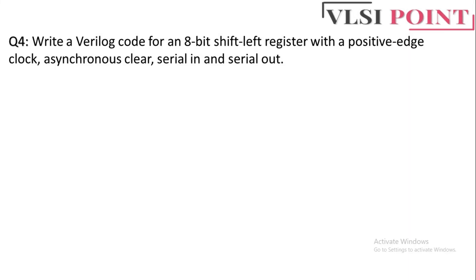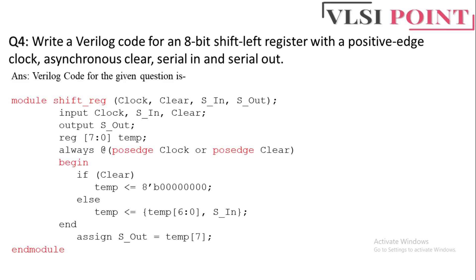Next question: write a Verilog code for an 8-bit shift left register with a positive edge clock, a synchronous clear, serial in, and serial out. The module includes inputs clock, clear, s_in, and output s_out, plus a temporary 8-bit register. We write: always @(posedge clock or posedge clear). The clear signal is mentioned in the sensitivity list because it is asynchronous, as discussed in the previous question.